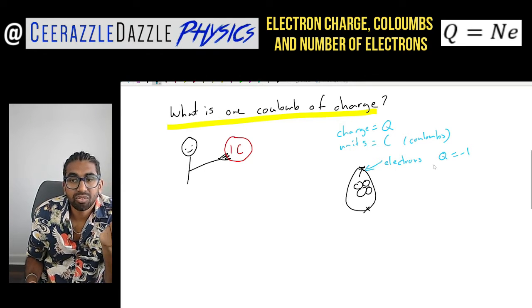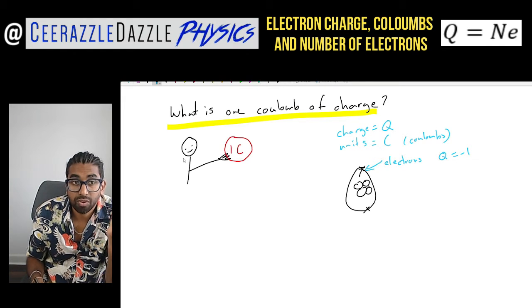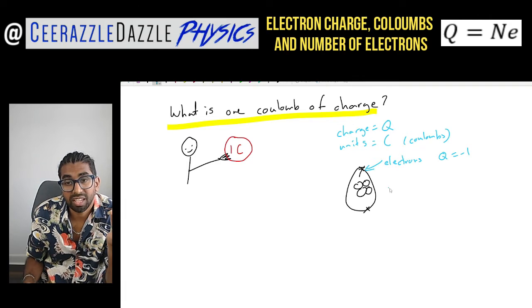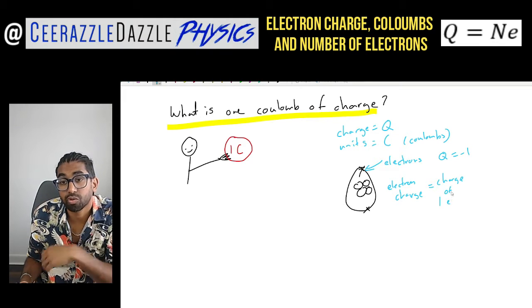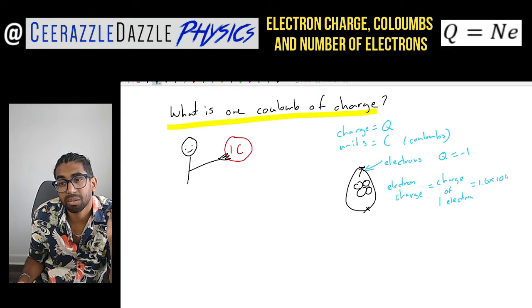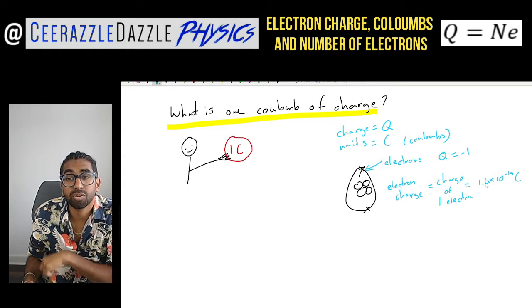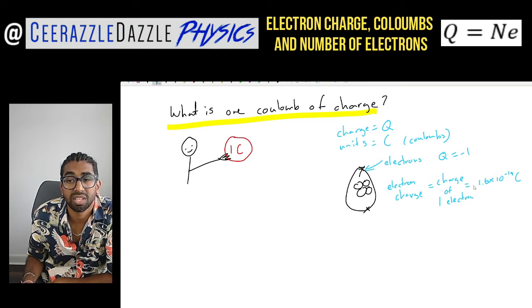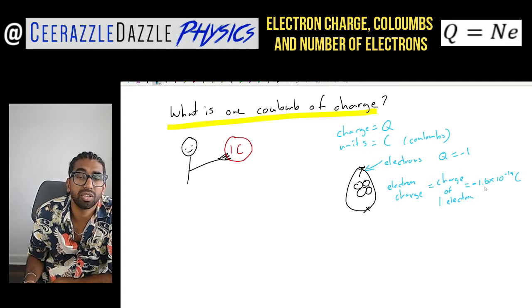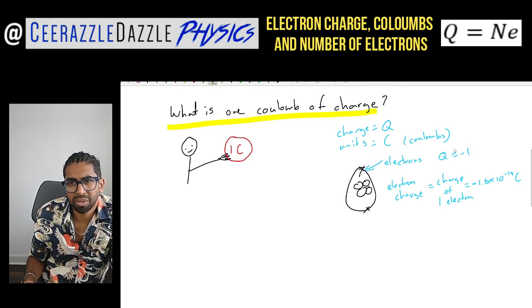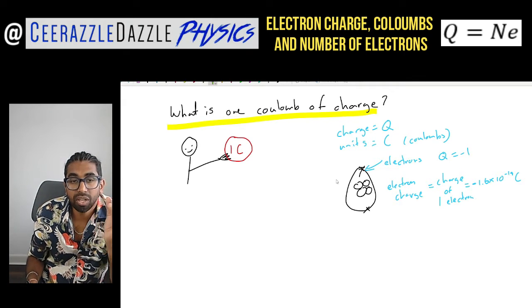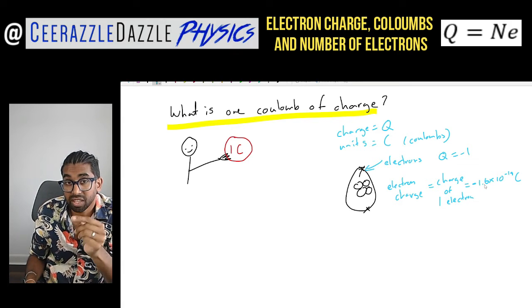Well, the key thing is this: yes, electrons have a charge of minus one, but now we're going to give you the actual value. There's something called the electron charge — it's simply the charge of one electron. The value is 1.6 times 10 to the minus 19 coulombs. Every single electron has a charge of 1.6×10⁻¹⁹ coulombs and it's negative because electrons are negatively charged. Lower down the school people said the charge was minus one because it's hard to get your head around this long number when you don't need it.